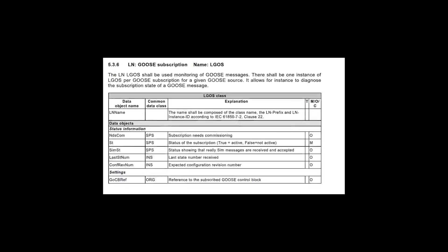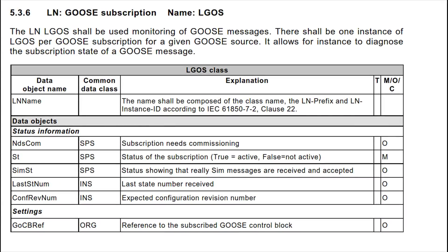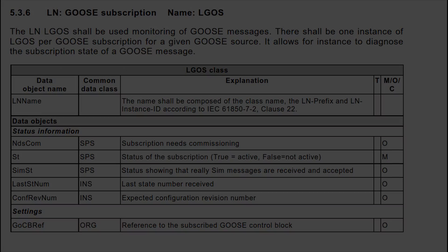As shown in this excerpt from the IEC 61850 specification, the ELGOS logical node is used for monitoring Goose messages through an MMS client connection. There is a separate ELGOS logical node for each subscription to a Goose publisher, which facilitates diagnosing the subscription state of Goose messages.